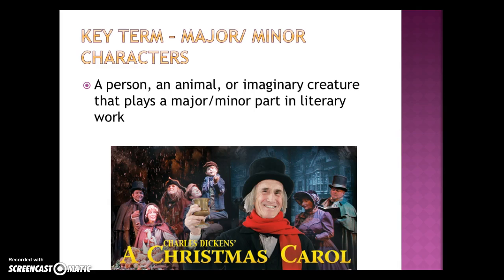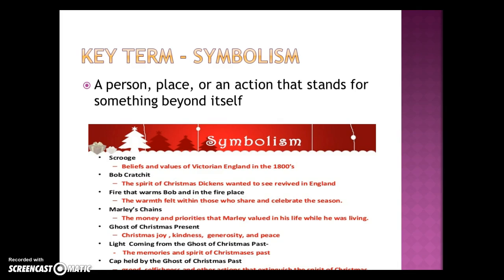Major and minor characters can be a person, an animal, or an imaginary creature that plays either a major or minor part in a literary work. In A Christmas Carol, there were quite a few of those particular characters. Symbolism is a person, place, or action that stands for something beyond itself — we saw that in A Christmas Carol as well.